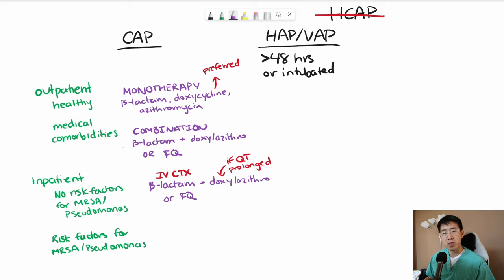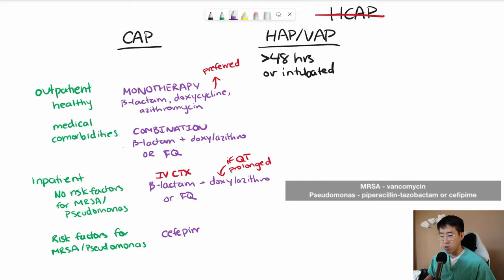Now, if they do have risk factors for MRSA and Pseudomonas, then we're definitely going to need to add coverage for those things. Risk factors for Pseudomonas or MRSA, typically we're going to reach for something with anti-pseudomonal coverage. So cefepime or Zosyn. And then for that MRSA coverage, we would add on vancomycin.